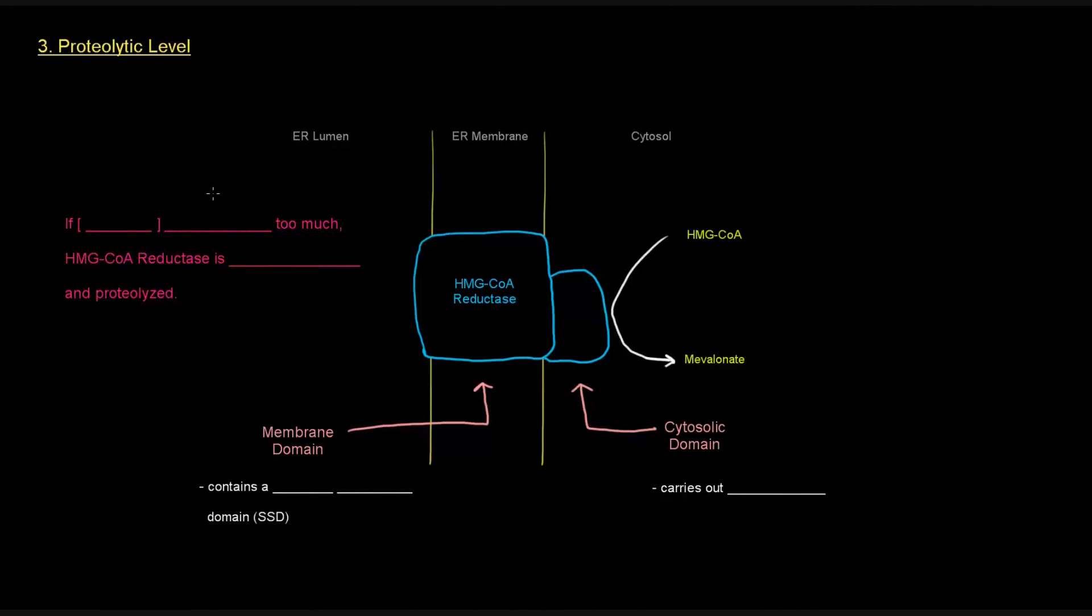And the proteolytic level is last. So we have HMG-CoA reductase here, and it's embedded in the ER membrane. It's got a membrane domain here, and it's got a cytosolic domain that actually does the conversion of HMG-CoA into mevalonate. So the cytosolic domain carries out the actual catalysis, converting HMG-CoA to mevalonate in the committed step. And then there's a membrane domain.